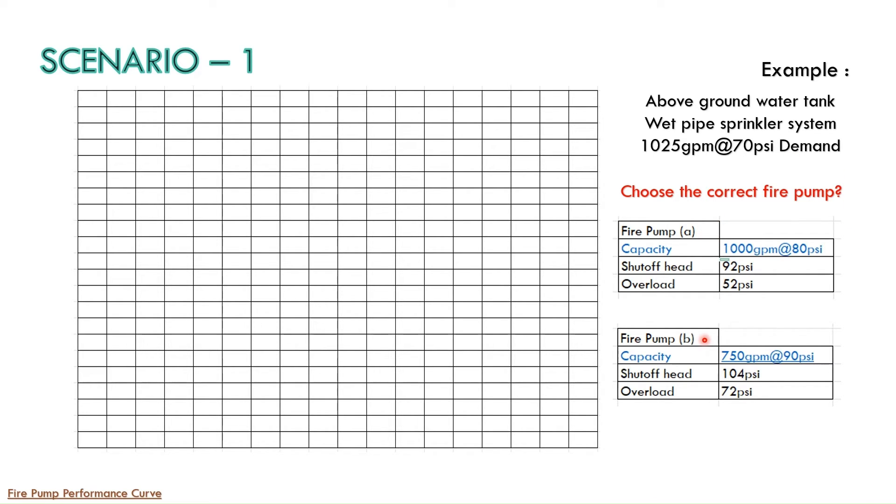So based on these data we need to select the fire pump. We have two options here fire pump A and fire pump B. Fire pump A capacity is 1000 GPM at 80 PSI and fire pump B capacity is 750 GPM at 90 PSI. So we need to draw the performance curve then only we will be able to select the correct fire pump. So we will consider the first option right now in this particular slide and draw the performance graph. So on x-axis we will put the flow in GPM and on y-axis we will put the pressure in PSI.